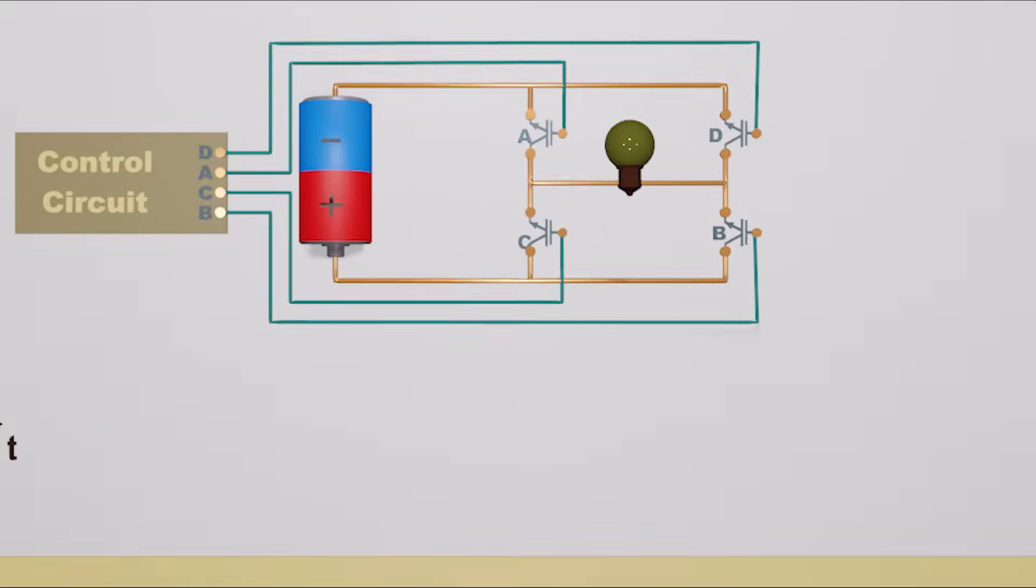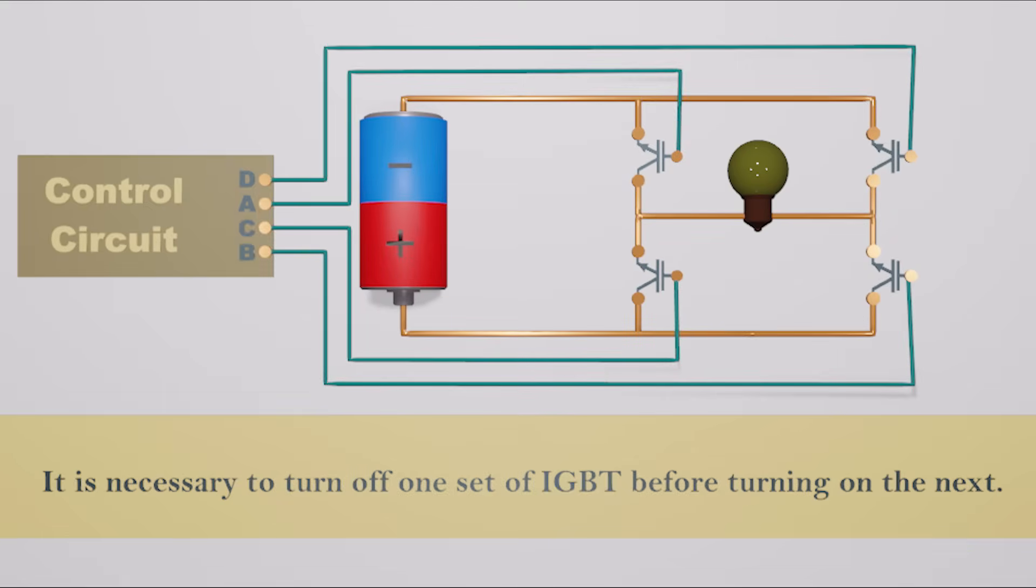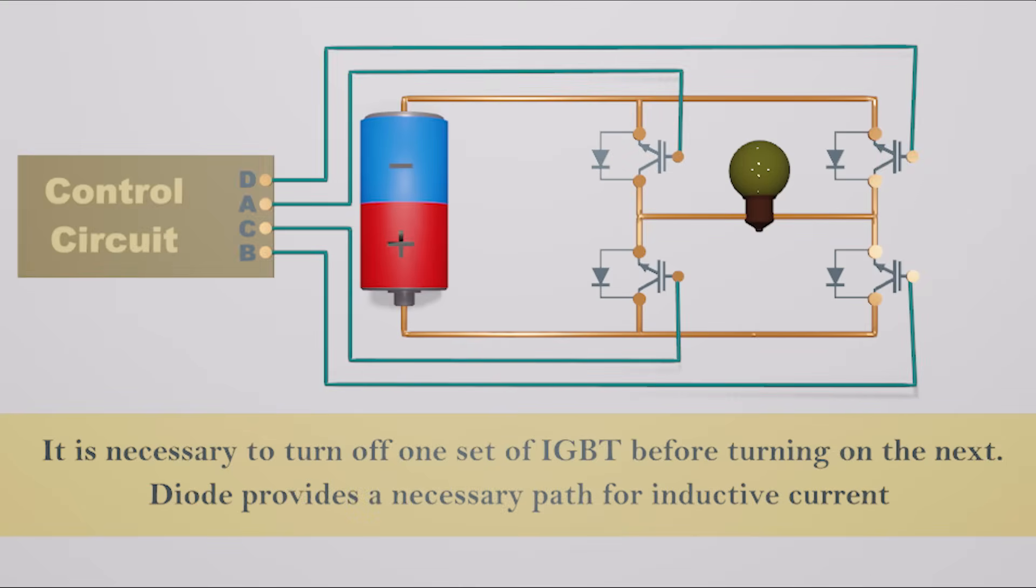To avoid damaging the IGBTs at short circuits, when changing polarity it is necessary to turn off one set of IGBT before turning on the next. During the transition, all the IGBTs must go off at one point. We normally use a diode with an IGBT to provide a necessary path for inductive current in order to limit potential voltage buildup during the transition period.